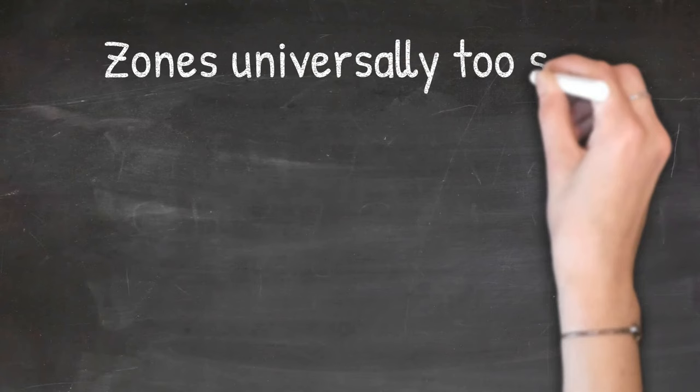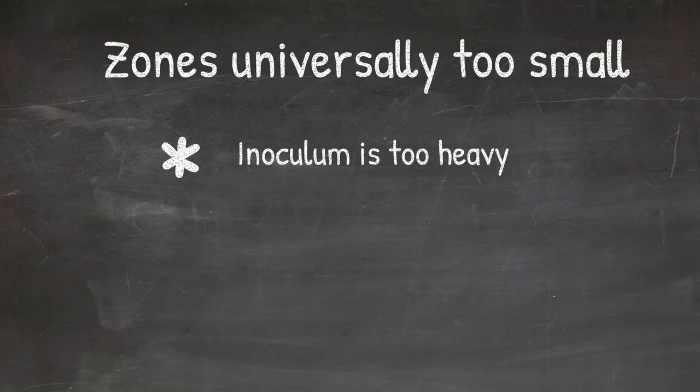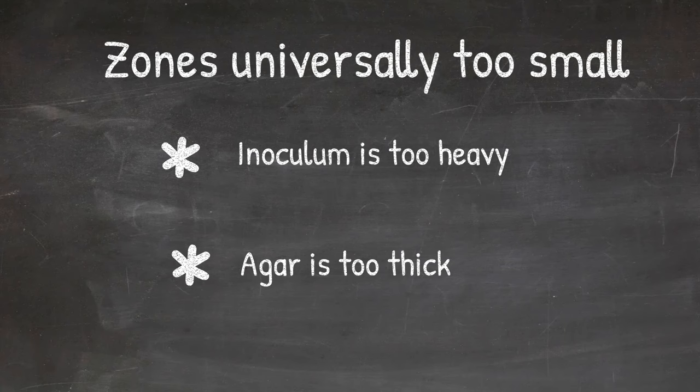If the zones are universally too small on control plate, it means inoculum is too heavy, or agar depth is too thick. The same thinking as when you get zones universally too large, just reverse the reason.